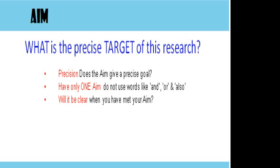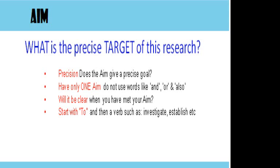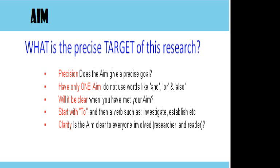It should be clear when you've met the aim that you've set. By having a precise aim, it could help you and your reader be clear when that has been achieved. Your aim should start with the word 'to' followed by a verb, such as 'to investigate', 'to establish', or 'to explore'. Clarity is very important — the aim needs to be clear to you as the researcher but also to anyone reading your work. It must be research focused: a very precise statement in one sentence of what you're going to achieve.